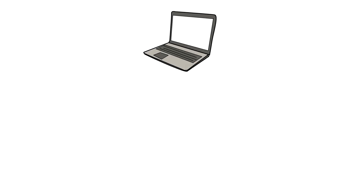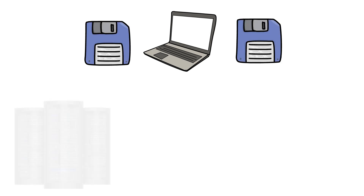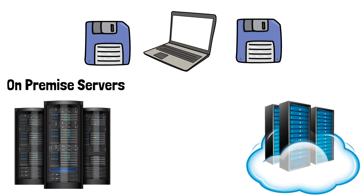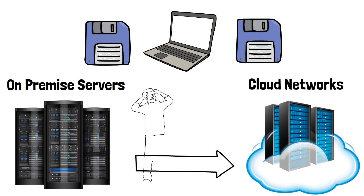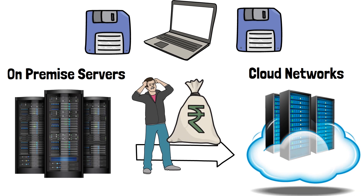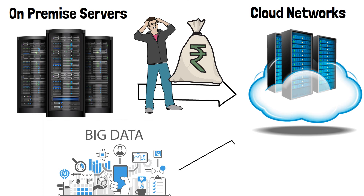Processing big data on a local computer is next to impossible because every computer has some limitations — you might run out of memory or space. Most of the time you will be processing your data on large computers, which can be some on-premise server owned by companies or cloud networks. These days many companies are moving from on-premise data centers to cloud networks because managing servers is really difficult and comes with a lot of cost. Large servers that can process huge amounts of data can be achieved using cloud services.